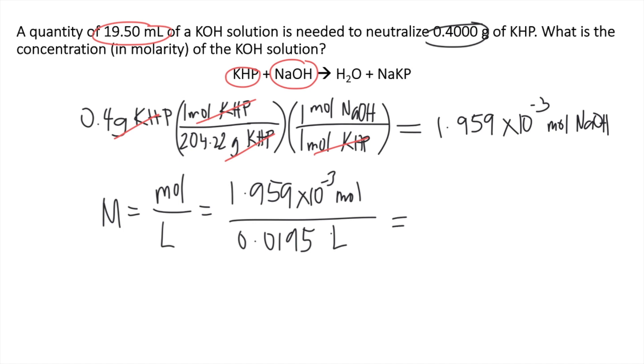If you solve that, 1.959 times 10 to the negative 3 divided by 0.0195, you will get approximately 0.100 moles per liter or 0.100 molar. This is the answer to the question.